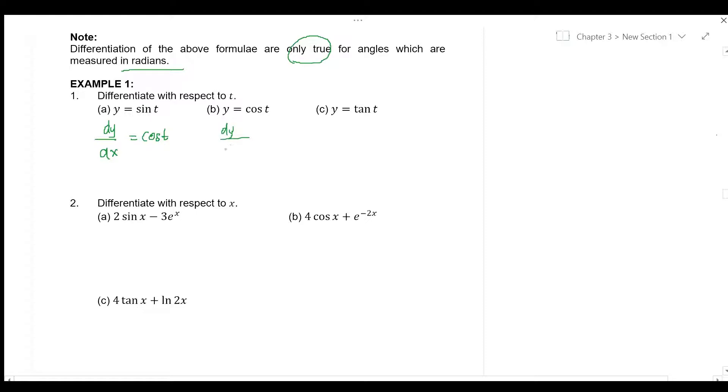For b, differentiation of cos t is negative sin t. And c, differentiation of tangent is sec² t.